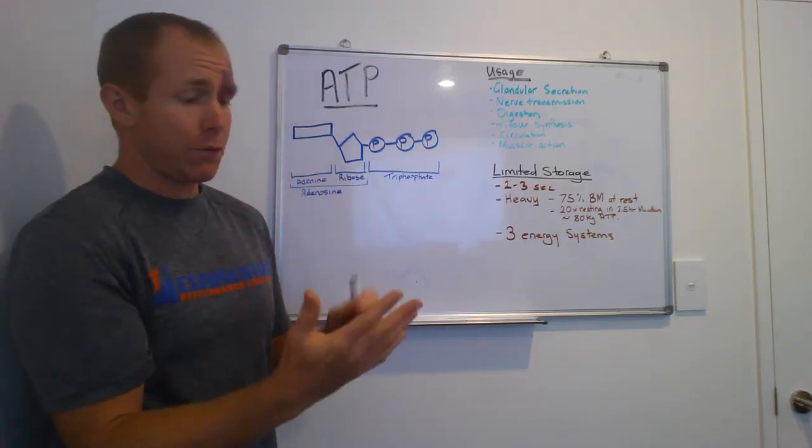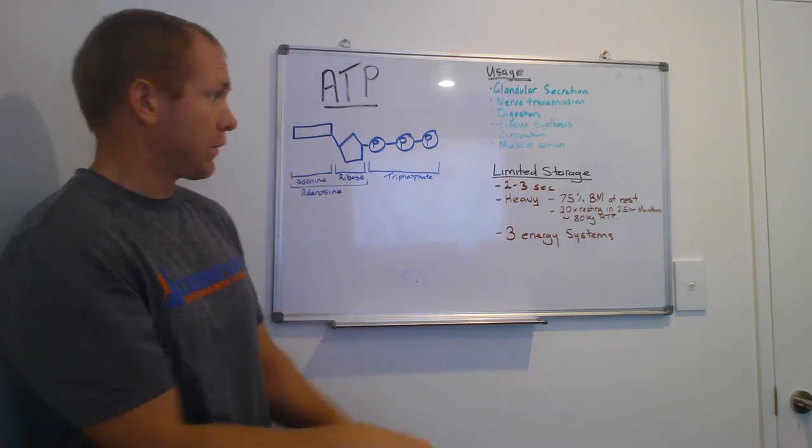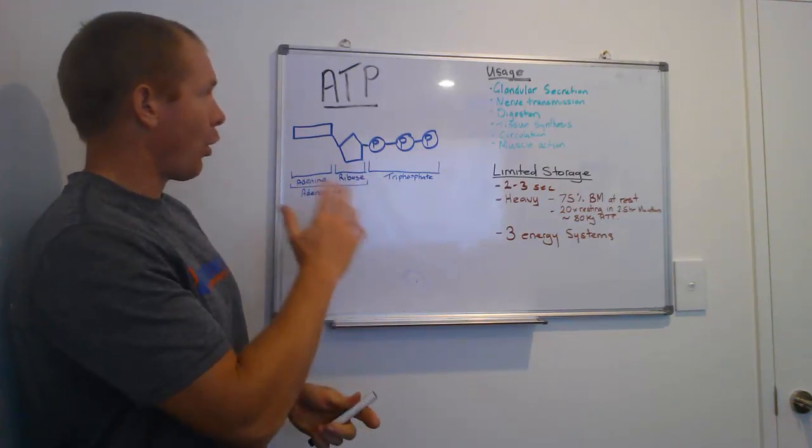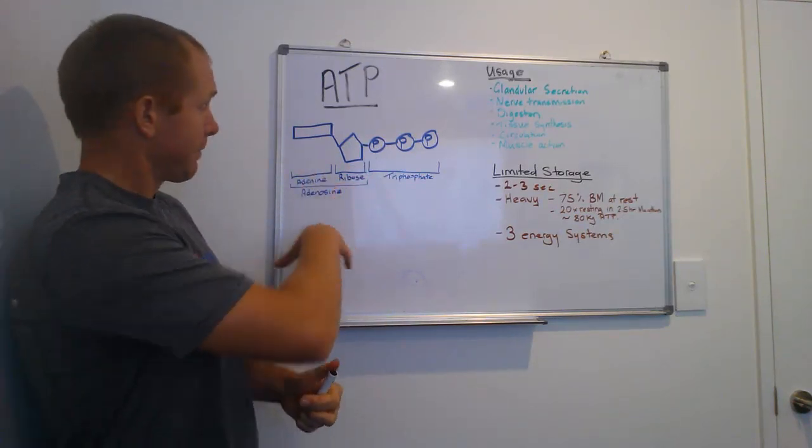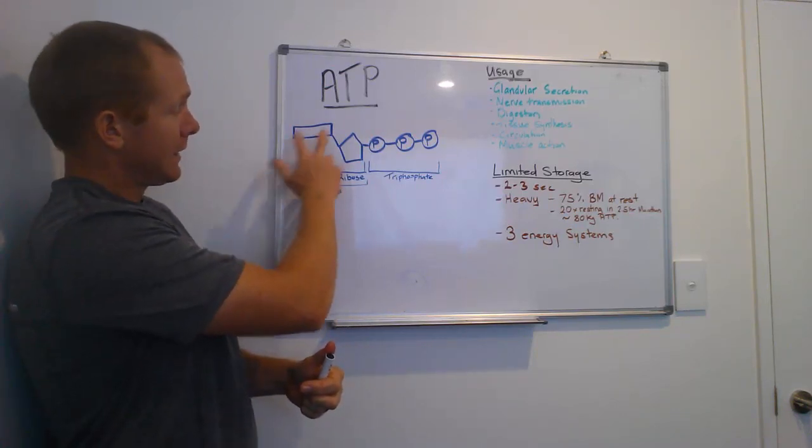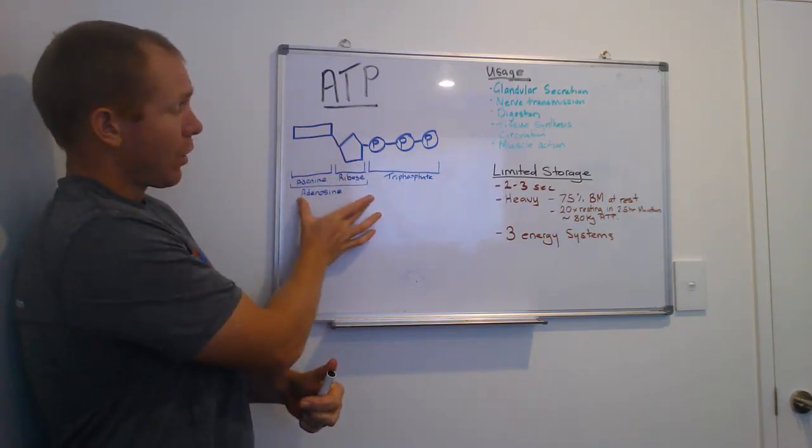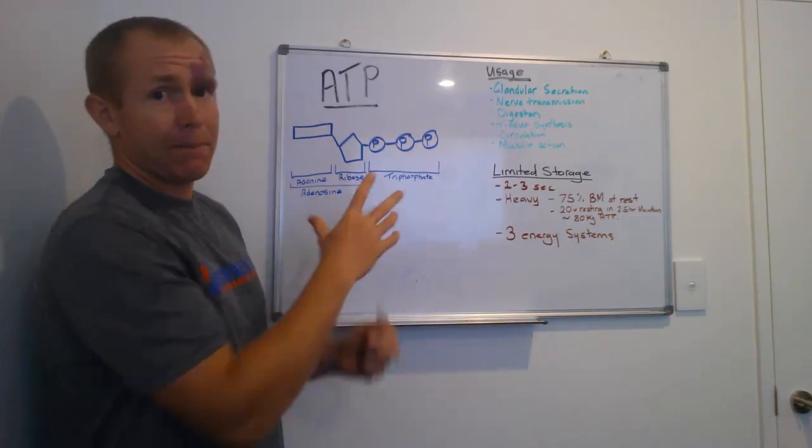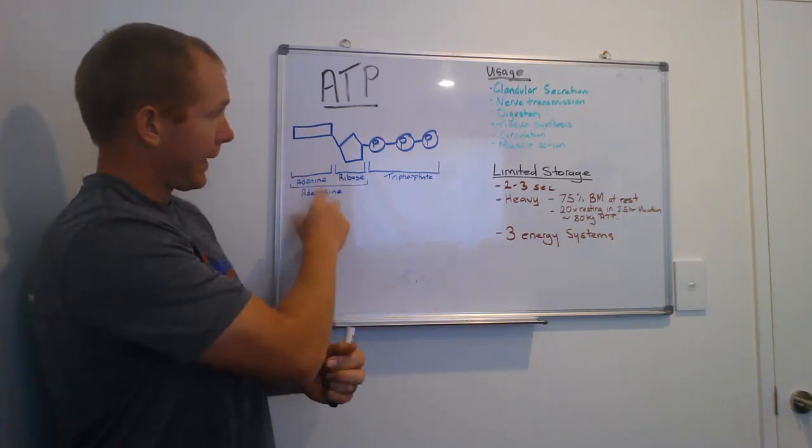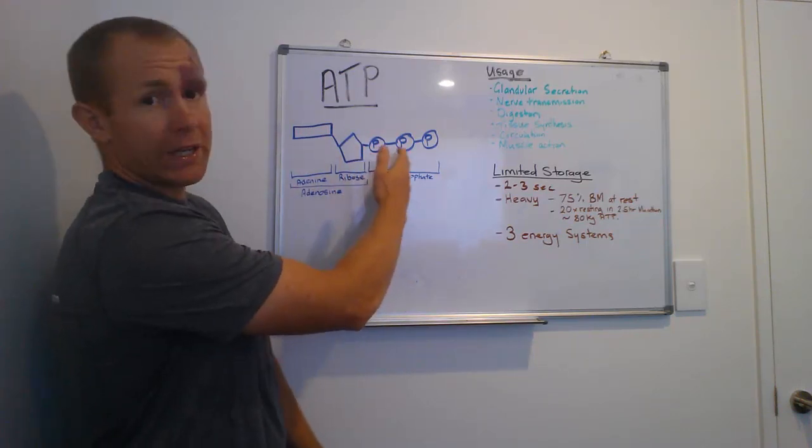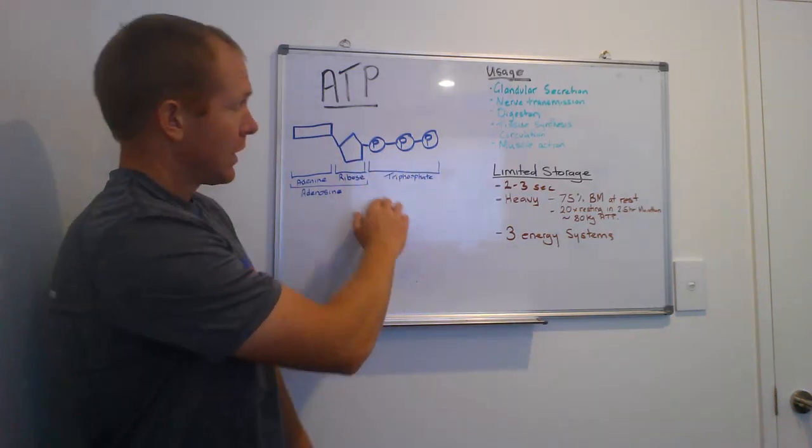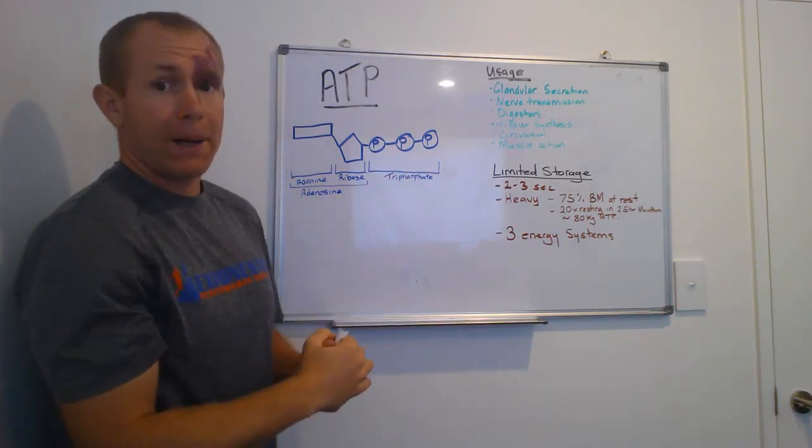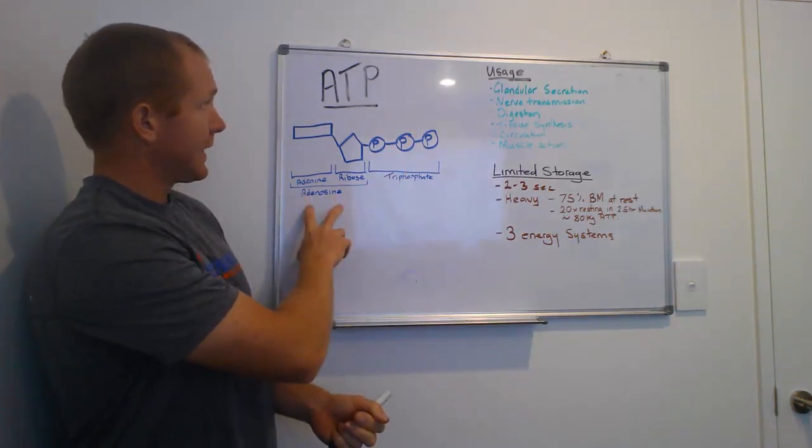So ATP, it stands for adenosine triphosphate. This is the molecular makeup, in a nutshell, of ATP. Basically, we've got an adenine, a ribose. Those two molecules there are what we call the adenosine part of our makeup here. And then we have three phosphate molecules joined onto the end of it there.